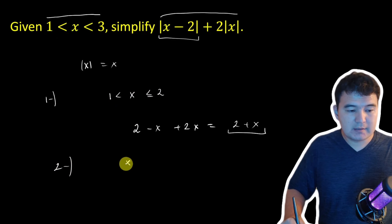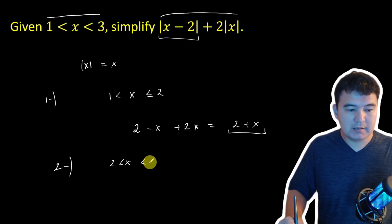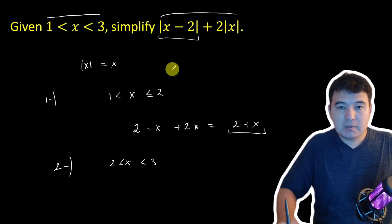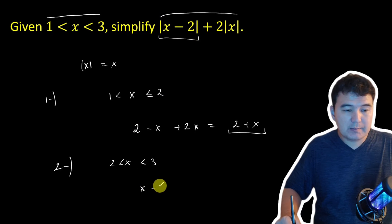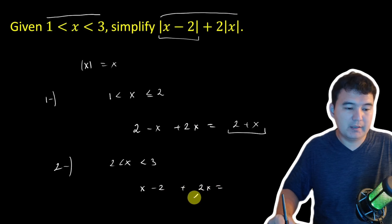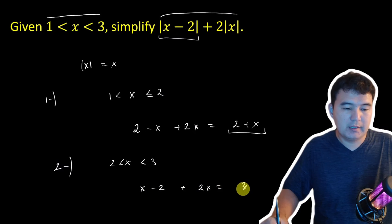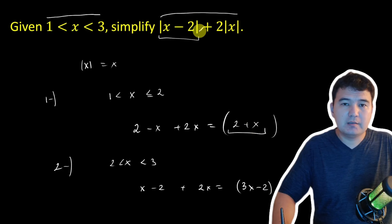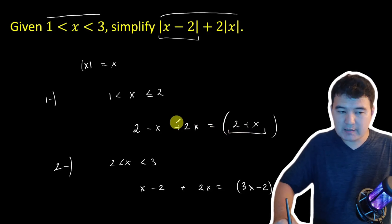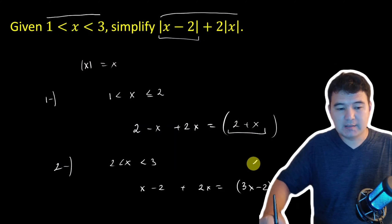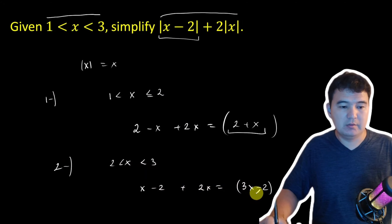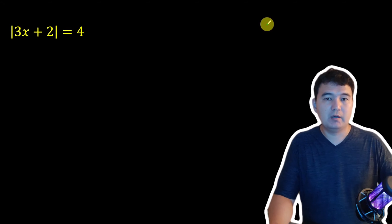In the second case, x is greater than 2 but less than 3. Since x is greater than 2, when we open the absolute values, the result is x minus 2 plus 2x. Simplified: x plus 2x gives 3x minus 2. So the simplest form is a conditional expression: when x is between 1 and 2, it's 2 plus x; if x is between 2 and 3, it's 3x minus 2.